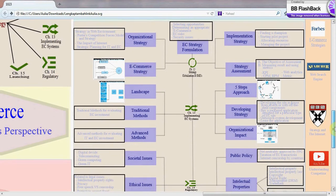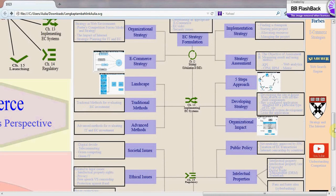Now I will explain about chapter 13, Implementing EC Systems. This chapter has six subchapters: Landscape of EC Systems, Traditional methods, Advanced methods, Five steps approach, Developing strategy, and Organizational impact of EC Systems.